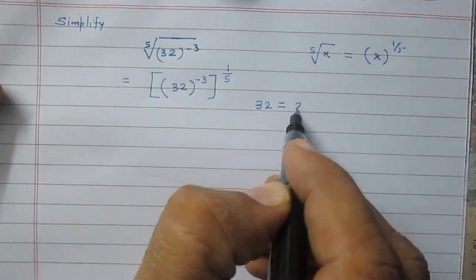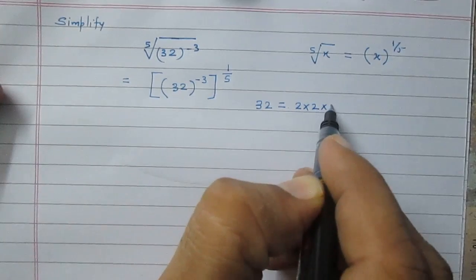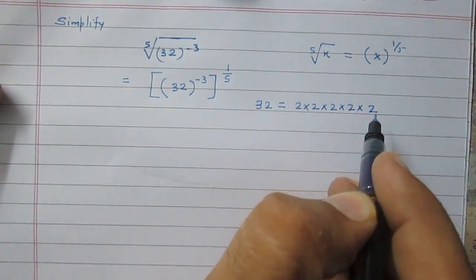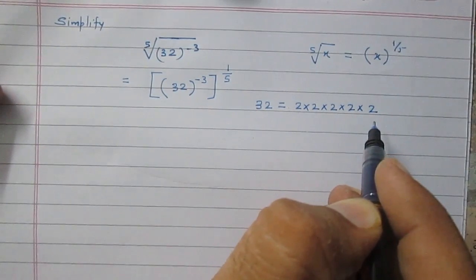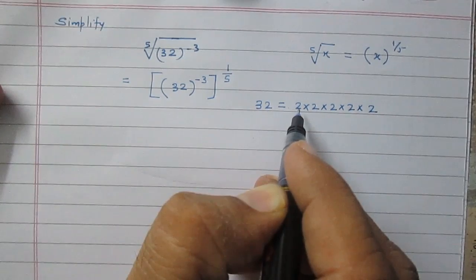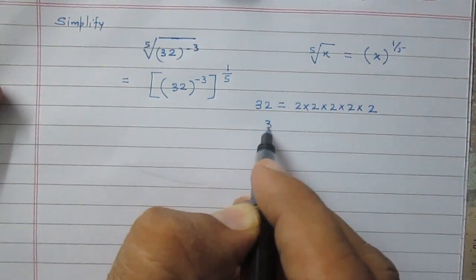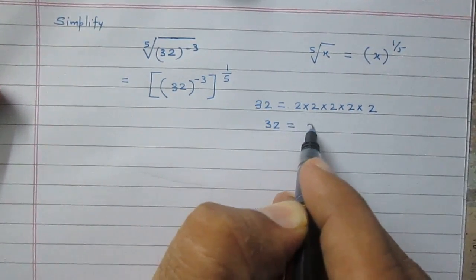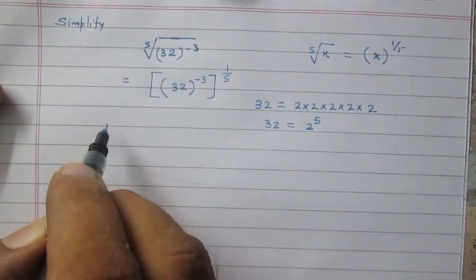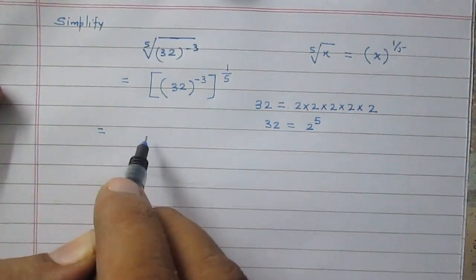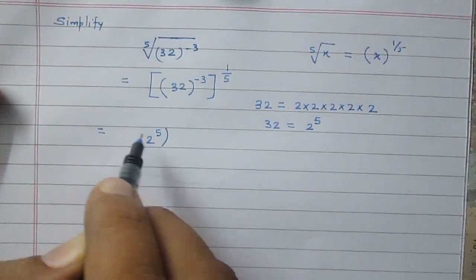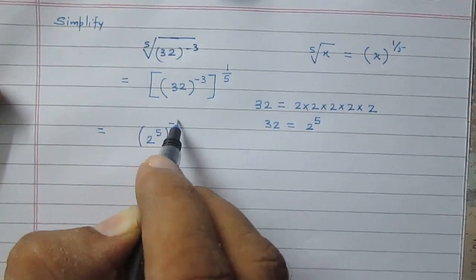Now we know that 32 can be factorized as 2 multiplied by 2 multiplied by 2, multiplied by 2, and again multiplied by 2. So 2 is multiplying by itself 5 times, which means 32 is equal to 2 raised to the power 5. We can rewrite this term as 2 raised to the power 5, raised to the power minus 3.